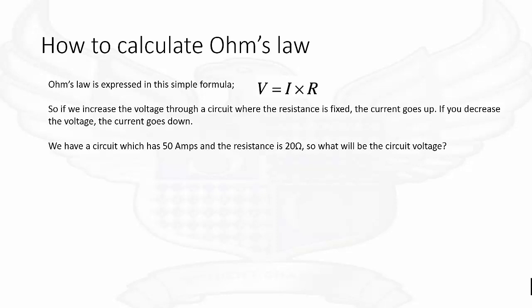We will now look at a practical example to see how Ohm's Law actually works. Our first example is we have a circuit which has 50 amps and the resistance is 20 ohms. What will be the circuit voltage? Using our formula, it will be 50 amps multiplied by 20 ohms, which gives us 1000 volts.